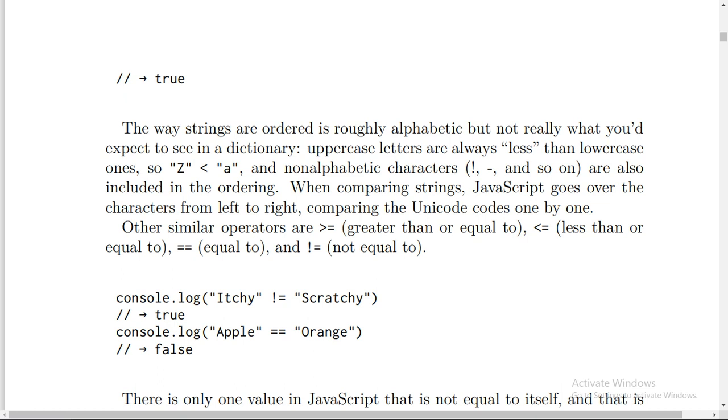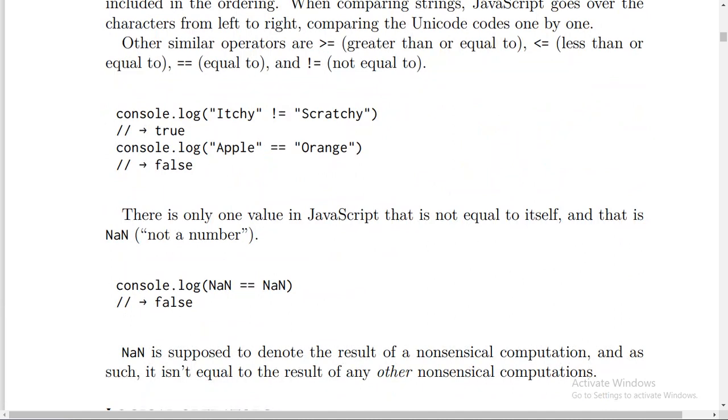Because it's apple not equal to orange. There is only one value in JavaScript that is not equal to itself, and that is NaN, not a number.